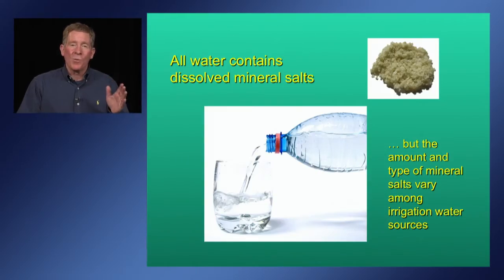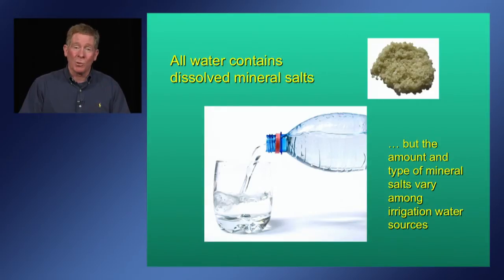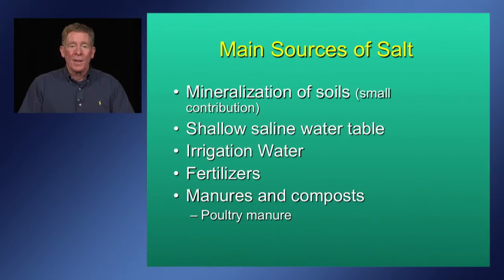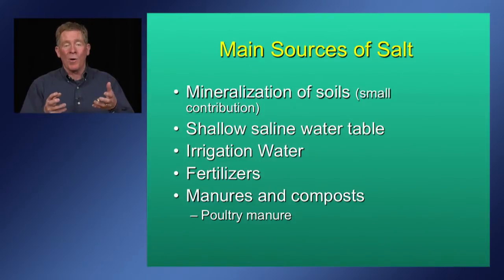All irrigation water contains salts and dissolved minerals, but the type and amount of salts varies from source to source. For example, surface waters typically have less salts than groundwater supplies. The main sources of salts come from the mineralization of soils, which is a small contributor — soils are minerals and when in contact with water can dissolve into various ions.